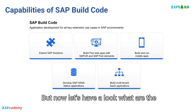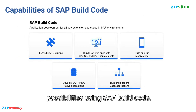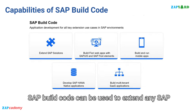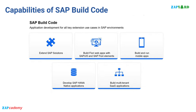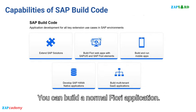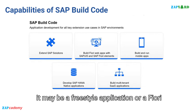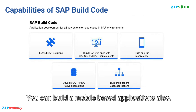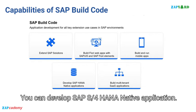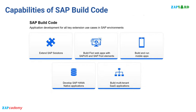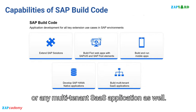Now let's look at what is possible using SAP Build Code. SAP Build Code can be used to extend any SAP solution. You can build a normal Fiori application — either a freestyle application or a Fiori element-based application. You can also build a mobile-based application, develop an SAP S/4HANA native application, or any multi-tenant SaaS application as well.